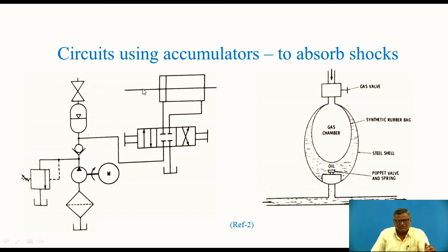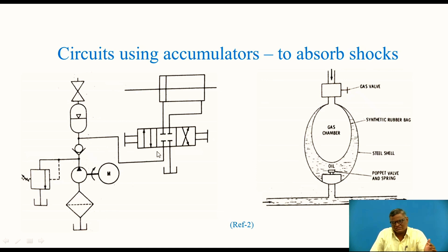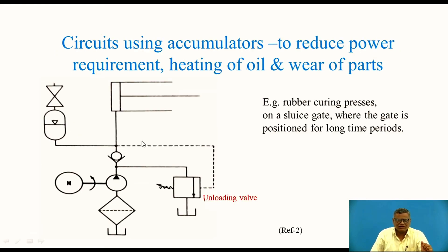The accumulator shown has a gas chamber; gas or air is introduced from the top side. Oil from the reservoir comes through the strainer, through the pump, through the check valve, and goes to both the pressure relief valve and the direction control valve. Oil is stored in the accumulator under gas pressure. When the sudden closure of port P of the direction control valve occurs, oil enters the accumulator and the gas gets compressed, absorbing the shocks. The accumulator connection is taken from the main line to the accumulator inlet.